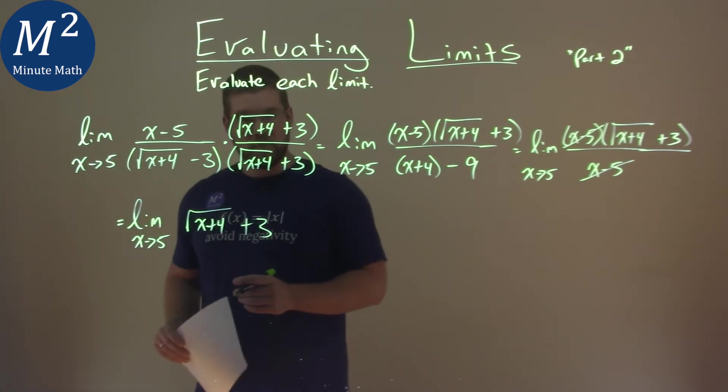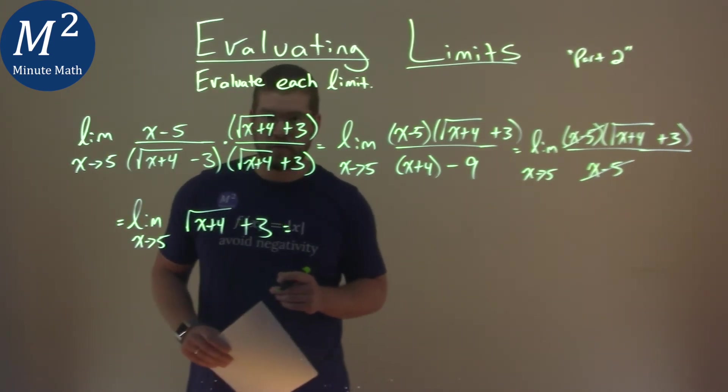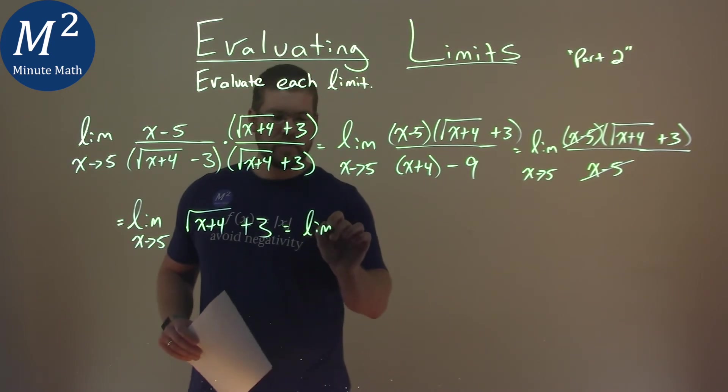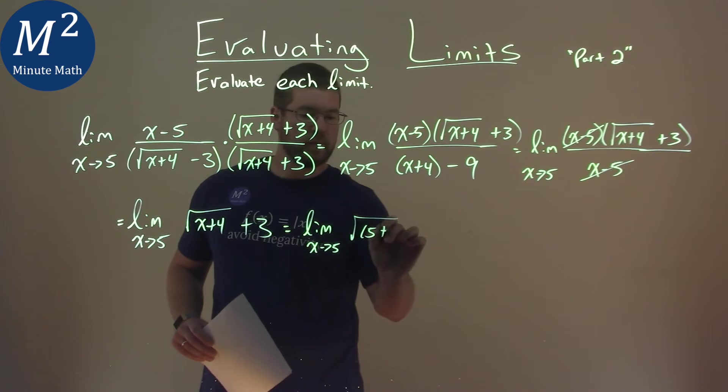And now, at this point, we can take the limit. We can plug 5 right in for x. So we have the limit here as x approaches 5 of 5 plus 4.